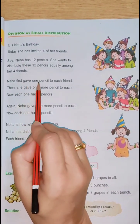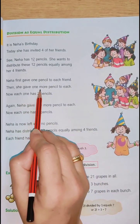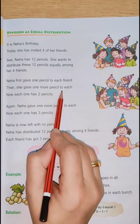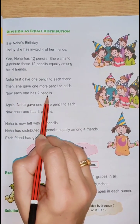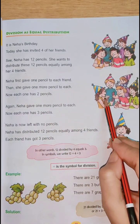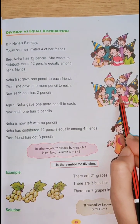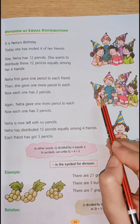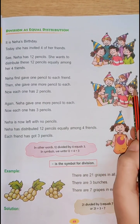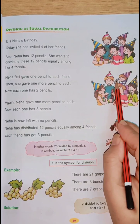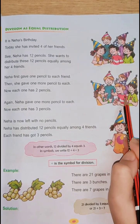Neha first gave one pencil to each friend. Then she gave one more pencil to each. Now each one has two pencils. She gave one pencil at a time to each of her four friends, so now each of her friends has two pencils. You can see in the picture they are holding two pencils each.